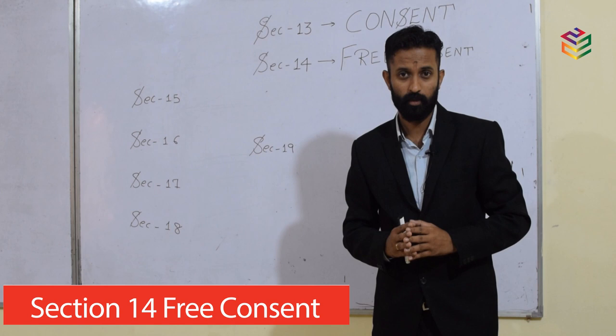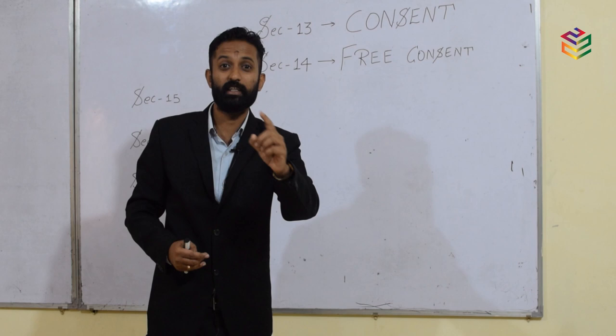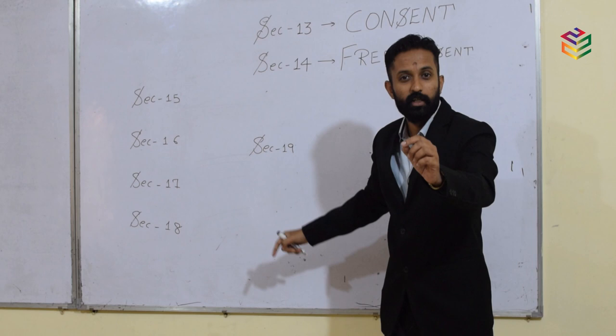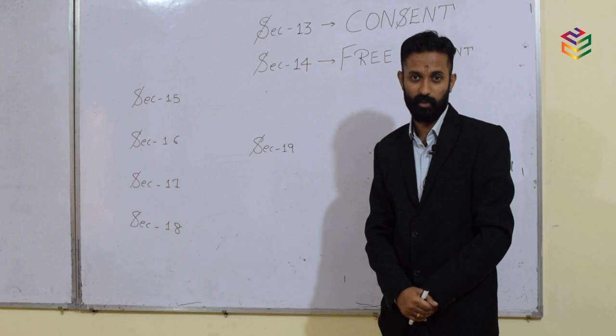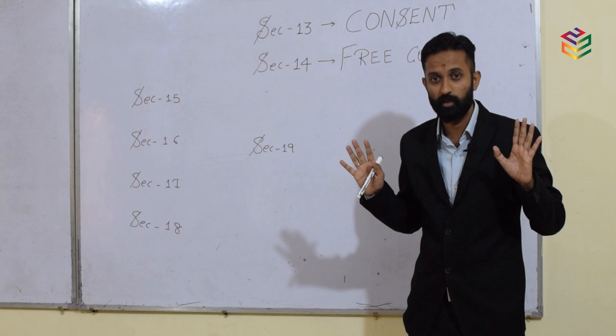Section 14 speaks about free consent, and it is defined in the negative. Consent is said to be free when it is not caused by: number 1, coercion (Section 15); number 2, undue influence (Section 16); number 3, fraud (Section 17); number 4, misrepresentation (Section 18); and number 5, mistake (Section 19, subject to the provisions of Sections 20, 21, and 22).